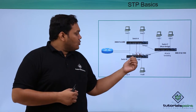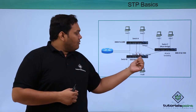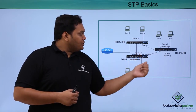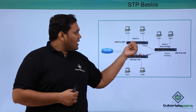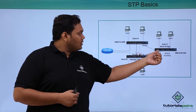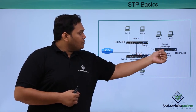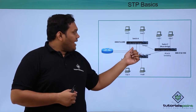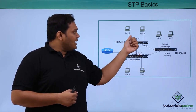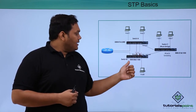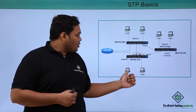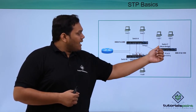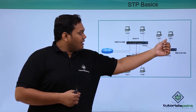Switch B through its root port will be connected to the root bridge, and switch A through its root port is connected to root switch C. Switch A has hosts C and D connected, switch B has hosts A and B connected, and switch C has hosts E and F connected.